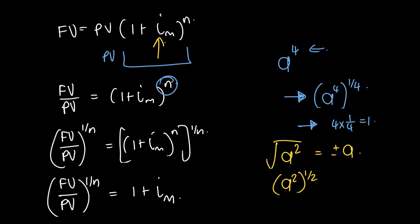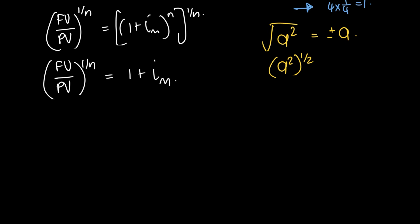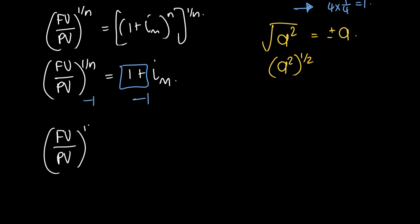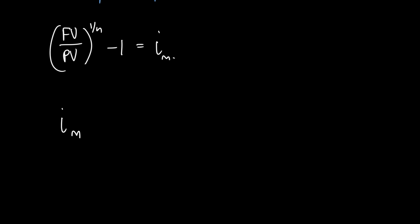We're now one more step closer to getting i/m by itself. The next thing we do is get rid of the 1 on the right-hand side — we just subtract 1 from both sides. So we have: (FV/PV)^(1/n) − 1 = i/m. We can rewrite this so that i/m is on the left-hand side.